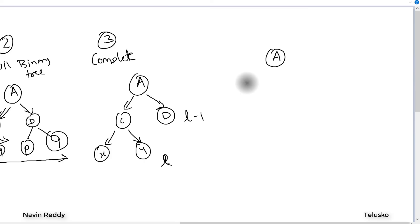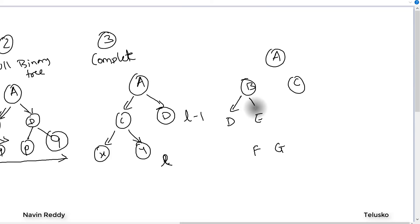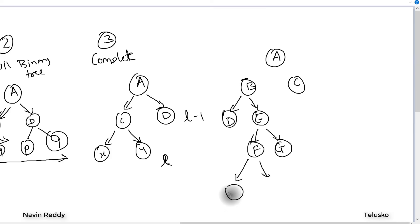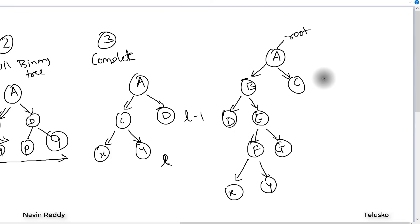Let me draw a simple tree: A is the root, then B and C; inside B we have D and E; inside E we have F and G; inside F we have X and Y. A is the root node, and C, G, X, Y, and D are leaf nodes. We also need to know two more terms: height and depth. The depth of node E is the path from root to E — that's A and B, so depth is two.